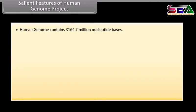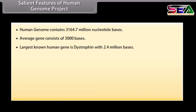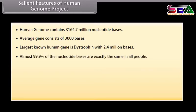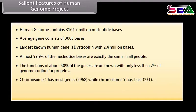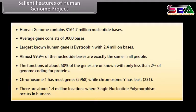The salient features of the Human Genome Project include: the human genome contains 3,164.7 million nucleotide bases, averaging 3,000 bases per gene. The largest known human gene is dystrophin with 2.4 million bases. Almost 99.9% of nucleotide bases are exactly the same in all people. The functions of about 50% of genes are unknown, with less than 2% of the genome coding for proteins. Chromosome 1 has the most genes (2,968) while Chromosome Y has the least (231). There are about 1.4 million locations where single nucleotide polymorphism occurs in humans.